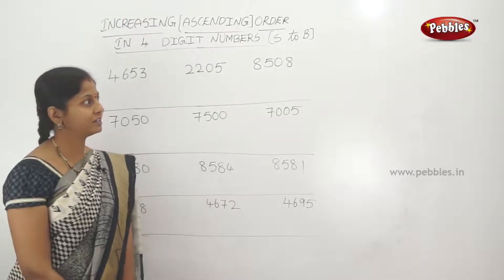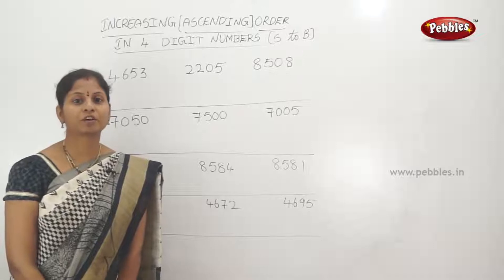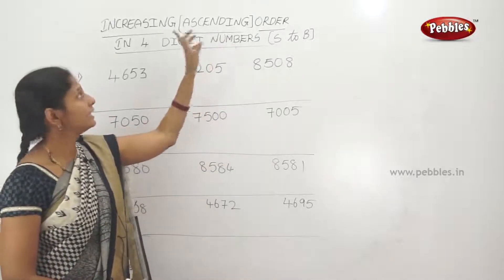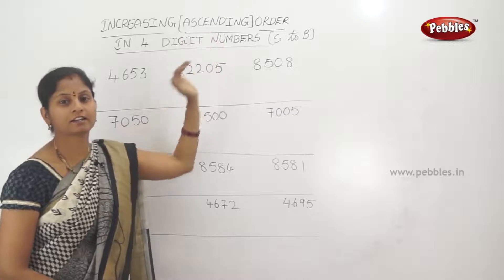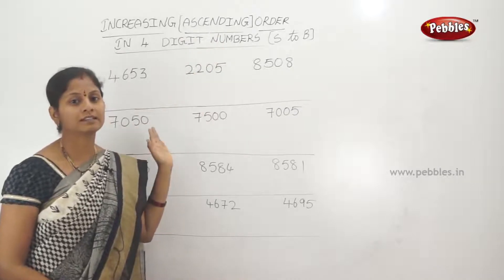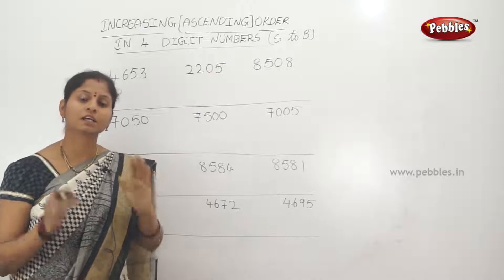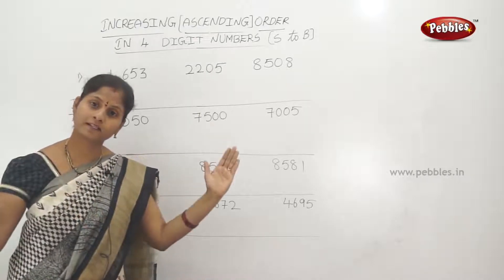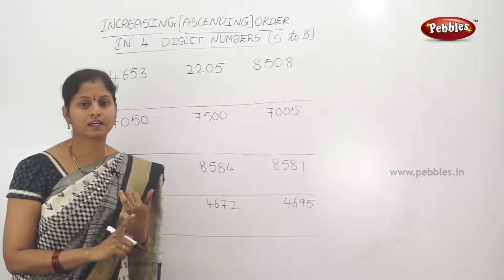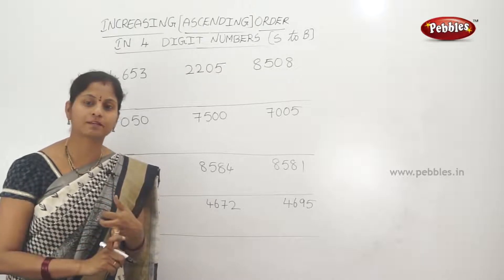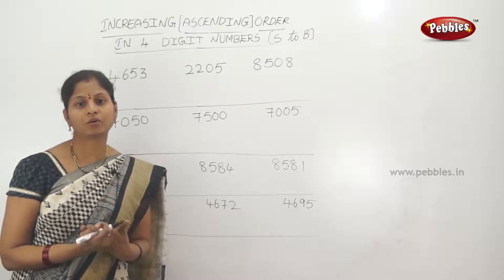Increasing order in 4-digit numbers. Increasing order and ascending order mean the same thing. We arrange numbers from the smallest number to the biggest number. The same method used for 2-digit and 3-digit numbers is followed here for 4-digit numbers.